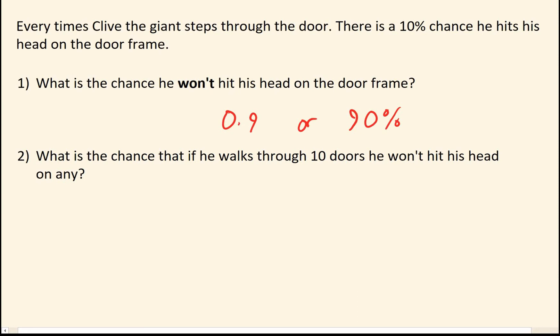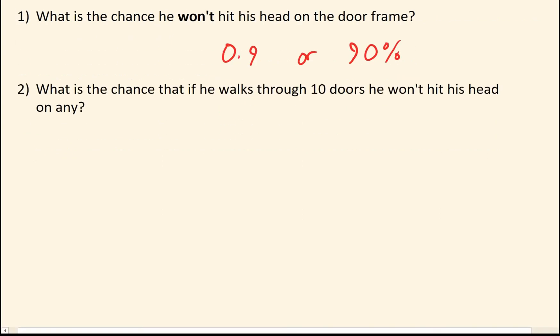To do this, you basically want to work out each probability and then times them all together. If you've done tree diagrams, in essence we're basically going down the tree path where he never hits his head. And remember from that, we always times along these branches.